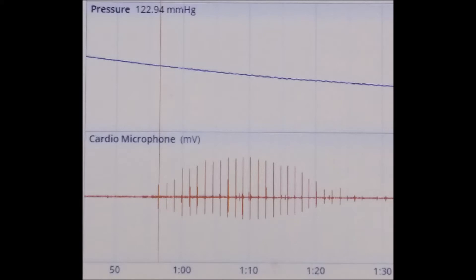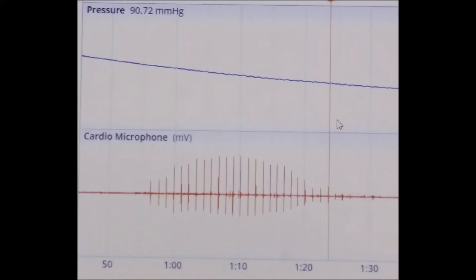Calculate the systolic pressure by placing your marker tool at the first sounds of Korotkoff. Then follow the vertical line up and find the corresponding pressure. Follow the same procedure using the last sound of Korotkoff to find the diastolic pressure.